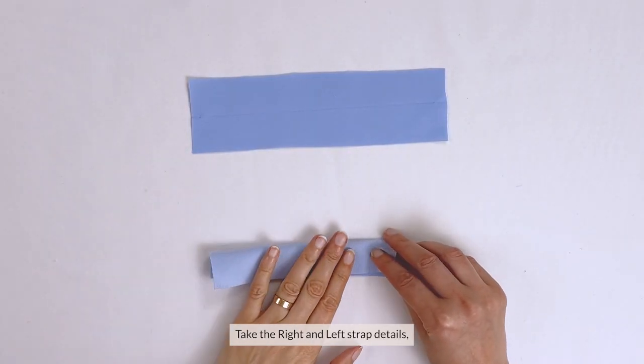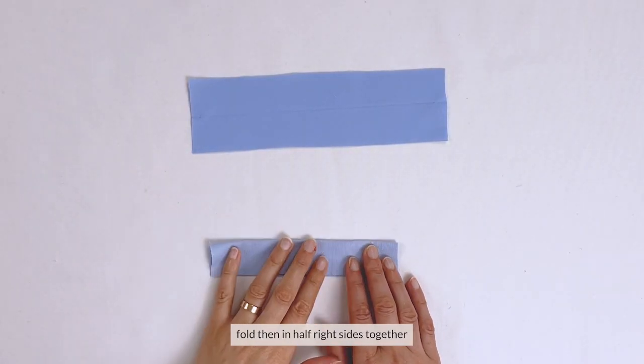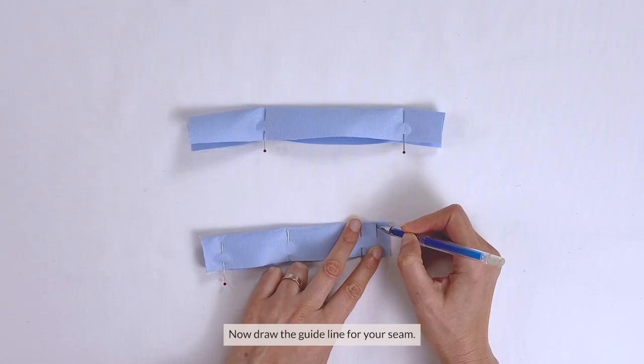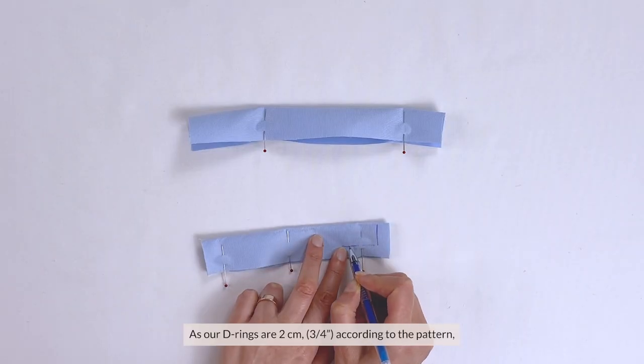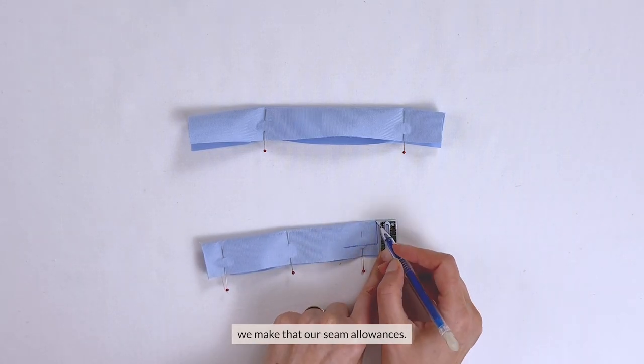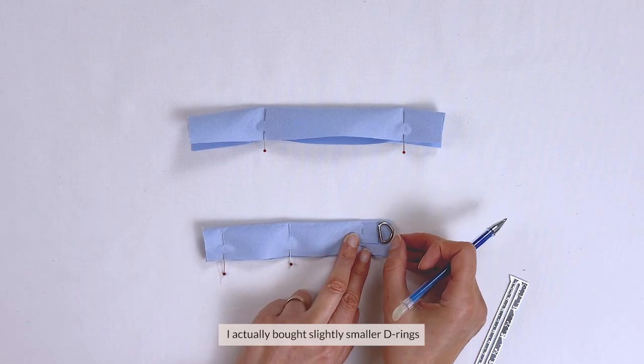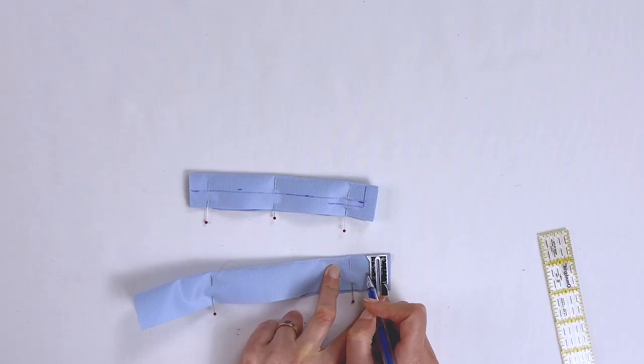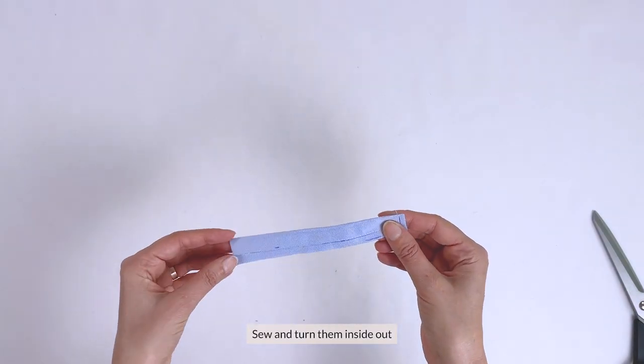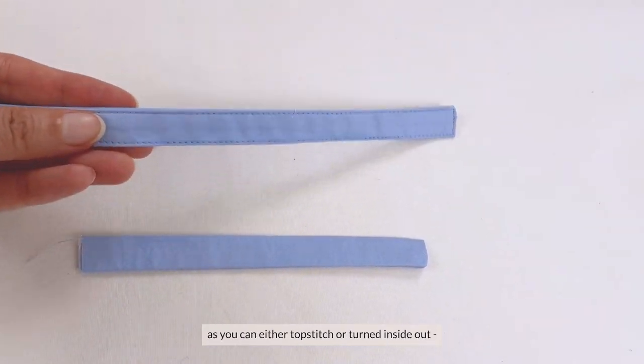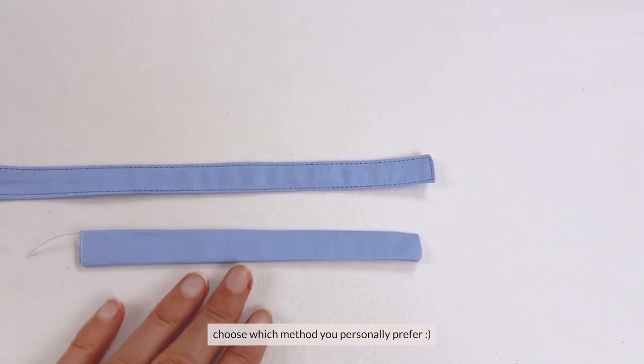Take the right and left strap details, fold it in half right sides together each, and pin. Now draw a guideline for your seam. As our D-rings are 2cm, or ¾ of an inch, according to the pattern, we are going to make that seam allowances. I actually bought slightly smaller D-rings, so I'll make the seam allowances a bit bigger. Sew and turn them inside out, and press. Here are the 2 strap details, as you can either topstitch or turn them inside out. Choose which method you personally prefer.